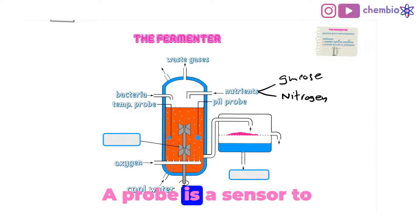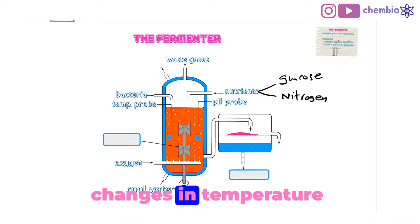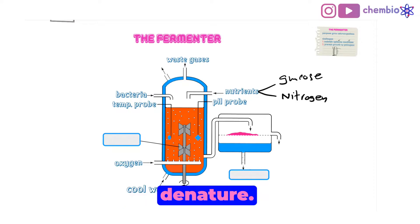What's a probe? A probe is a sensor to detect the changes of temperature and pH. Because otherwise, the changes in temperature and in acidity or pH would cause the enzymes of the bacteria to denature.